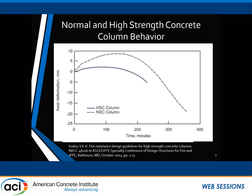The upper curve shows a normal strength concrete column and the lower shows the high strength column. There is an initial expansion in the normal strength concrete and then a contraction. In the high strength concrete, you hardly see much expansion at all. This change from expansion to contraction is one of the key phenomena concrete exhibits, and it becomes particularly challenging when you add the additional difficulties of spalling — how do we model this?